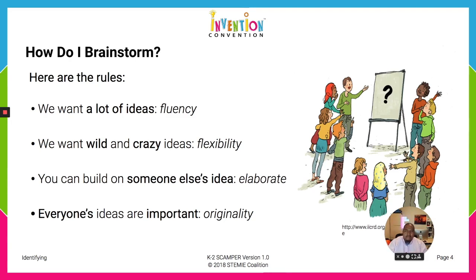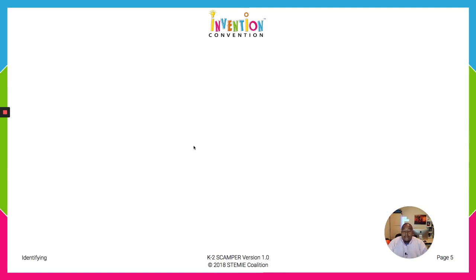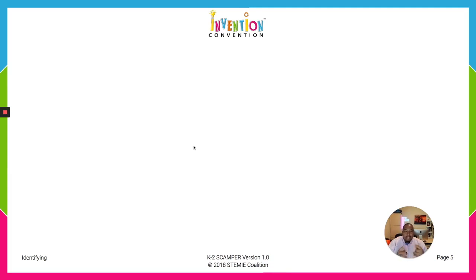These are some of the rules to keep in mind when you're brainstorming. Now I want you to take about five minutes, break up into groups, and work in your small groups to brainstorm some invention ideas. Think about things you can invent and what problems you can solve. This is a basic exercise to get your brains working on potential ideas you can use when you participate in the invention convention. You may want to write some of these down because they may turn into the invention you want to pursue.